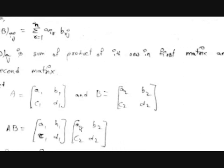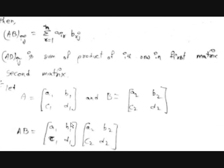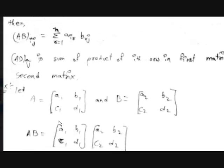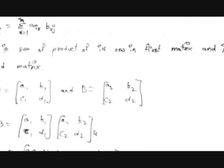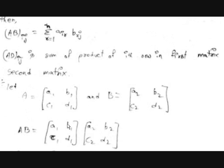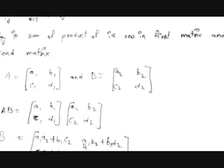The first element in the result is A1·A2 + B1·C2. For the second element in the first row, multiply the first row with the second column: A1·B2 + B1·D2.